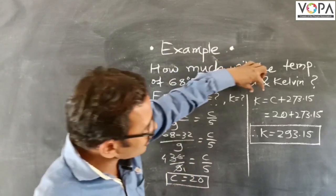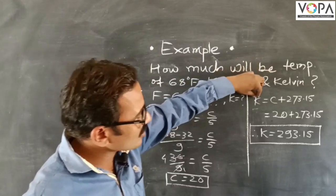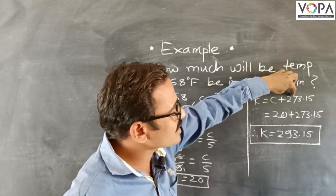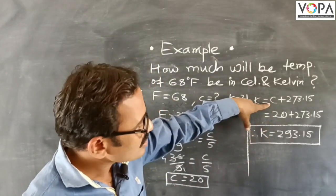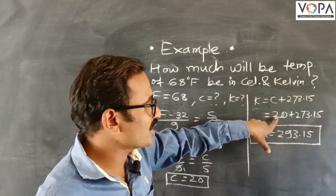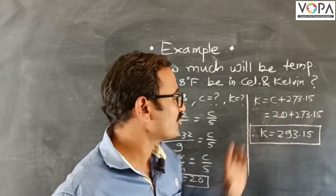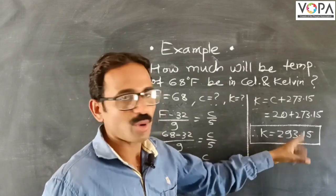Now, the relation between Kelvin temperature and degree Celsius is K equals C plus 273.15. Here we have degree Celsius temperature is 20. That equals 20 plus 273.15. Therefore, K equals 293.15.